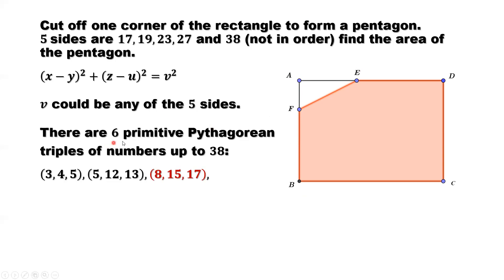There are six triples that satisfy this kind of relationship. 3, 4, 5, we know. And 5, 12, 13, we know. This is only up to 38, the hypotenuse.